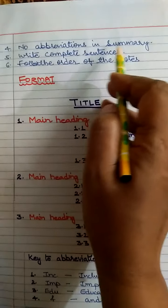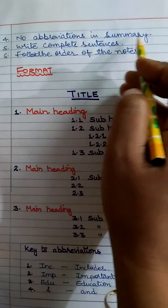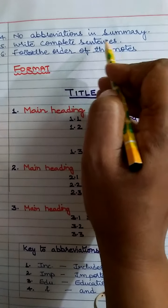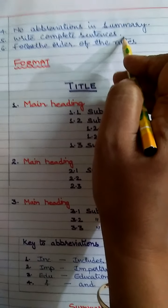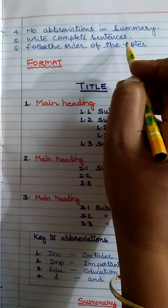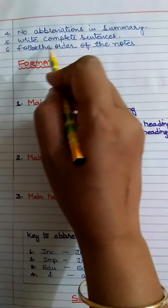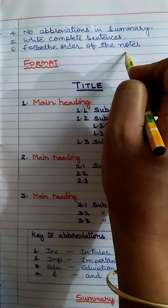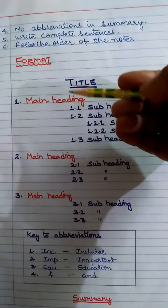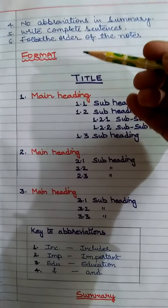No abbreviations in summary. In summary there is no need of writing abbreviations. Write complete sentences. Your sentences should be complete, grammatically correct. No shortcuts should be written. Avoid using WhatsApp language in your note-making and in your summary. Follow the order of the notes. What points you have written should go in order. In a systematic way you need to write your summary as well.